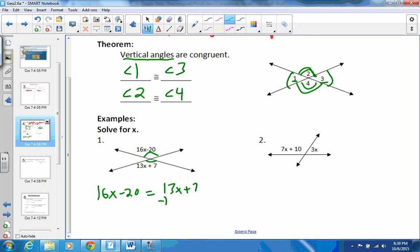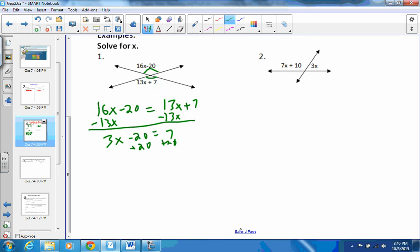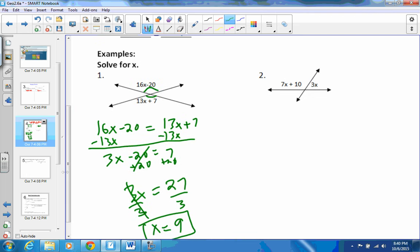So I'm going to subtract 13x from both sides, and end up with 3x minus 20 equals 7 over here. Now I'm going to add 20 to both sides to get the variable term all alone. And I end up with 3x equals 27. Last step, I'll divide both sides by 3, and then we just have x equals 9. So we solved for x in that one using that theorem, directly from what we said.